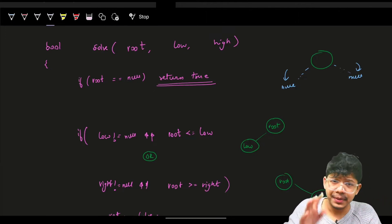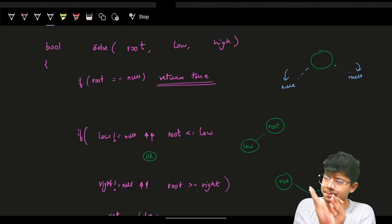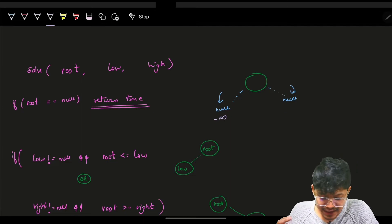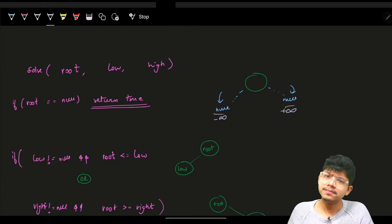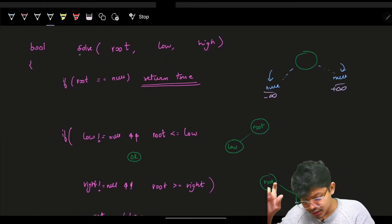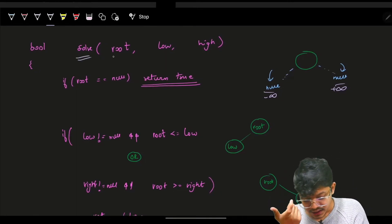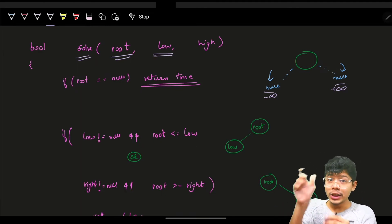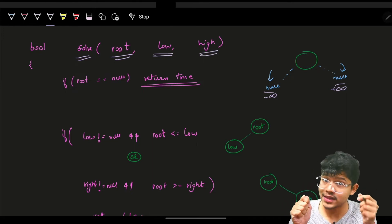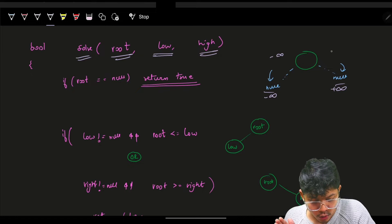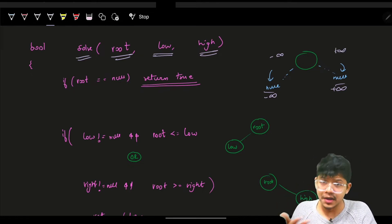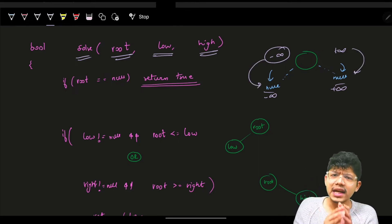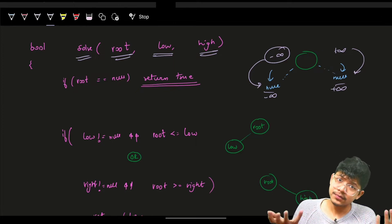Now let's code this up. We put limit values on each node. We can use actual numbers like minus infinity and plus infinity, or represent them as null. Let's name our function 'solve' — it takes the root node and also the low and high values for that node. Initially, low and high are null, representing no limit.